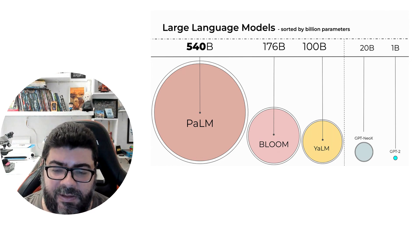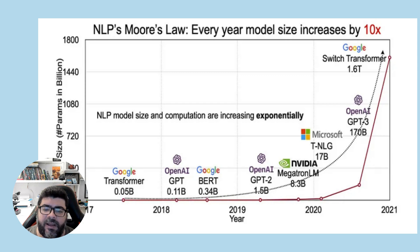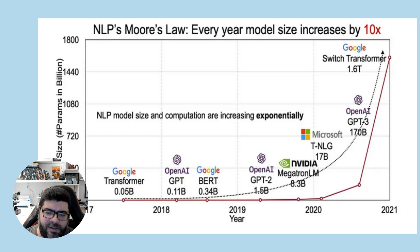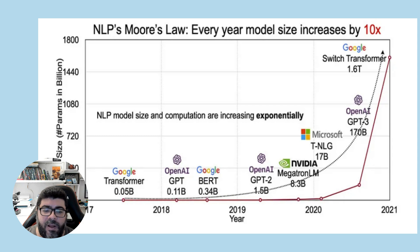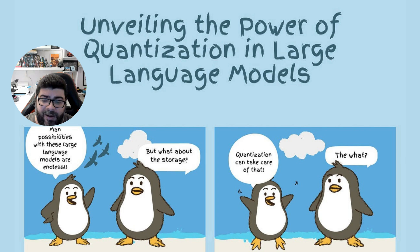If you look at this graph, you can see natural language processing memory growth — the increase in memory needed to run large language models and the increased number of parameters. For example, the Switch Transformer from Google requires around 1,600 billion parameters.